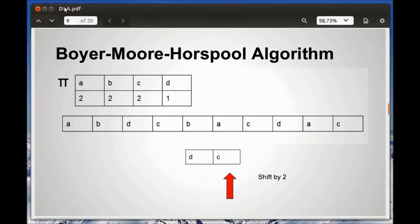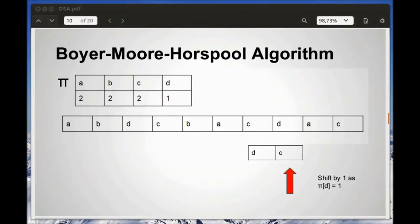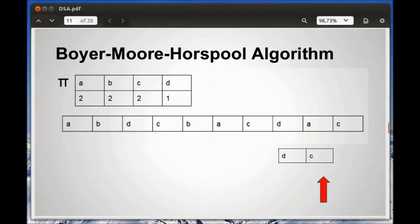Now we check A and C, which is a mismatch, so we shift by 2. We check D and C, which is also a mismatch, but we shift by 1 because π(D) is 1. We finally check A and C and find a mismatch, so we end our search.